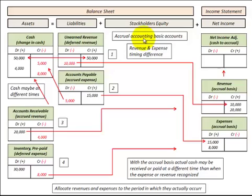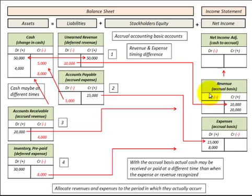Here we're going to be looking at accrual basis accounting and how it works. In accounting you have two methods to choose from: either the cash basis or the accrual basis. With the cash basis, you recognize your revenues and expenses when the cash is actually received or actually paid.